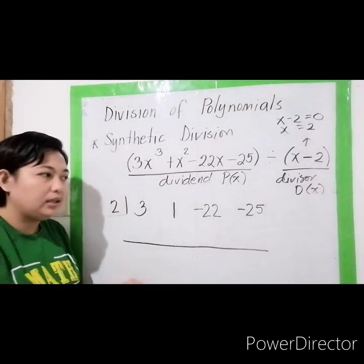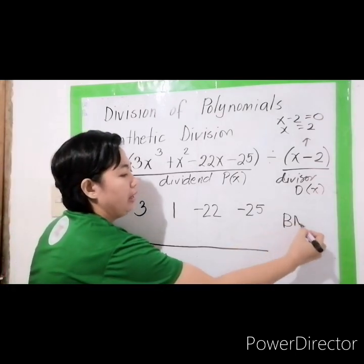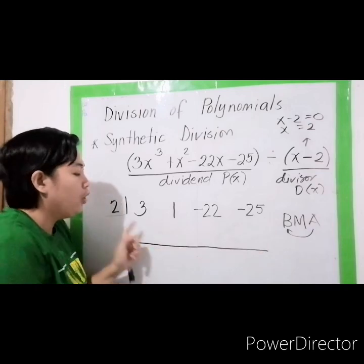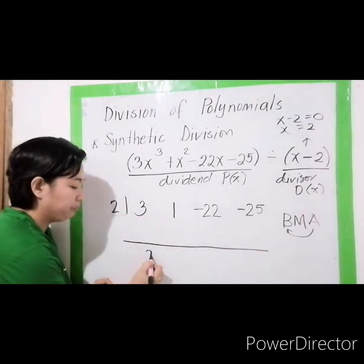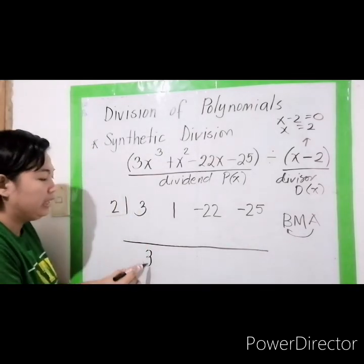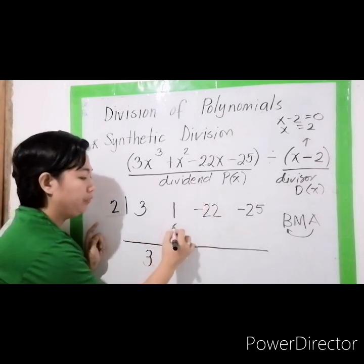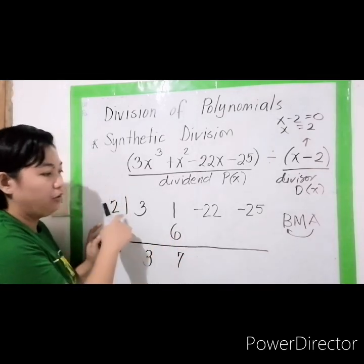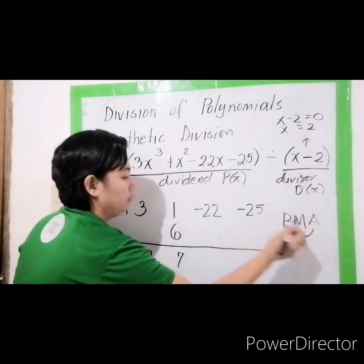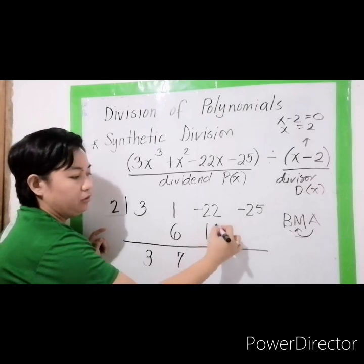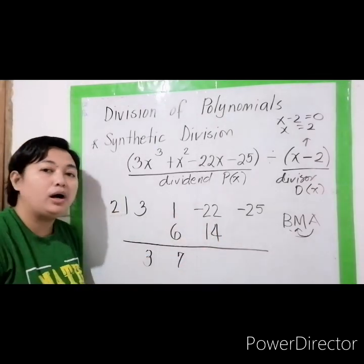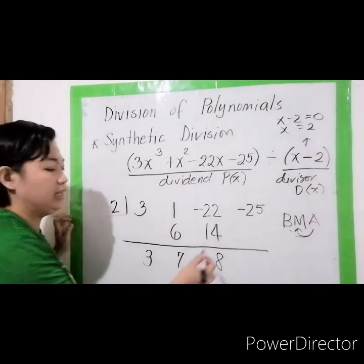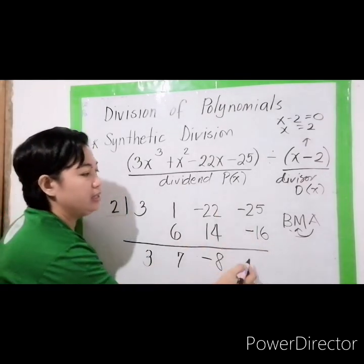In using synthetic division, I use B, M, A — meaning bring down, multiply, and add. Bring down the first coefficient, which is 3. Then multiply: 3 times 2 is 6. Place it in the next column. Then add: 1 plus 6 is 7. Back to multiply: 7 times 2 is 14. Place it in the next column. Negative 22 plus 14 is negative 8. Then negative 8 times 2 is negative 16. Adding: this is negative 41.